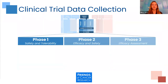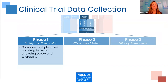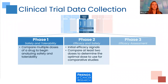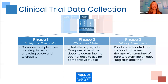Breaking down clinical trials into their phases: phase 1 focuses on safety and tolerability, comparing multiple doses of a drug to begin analyzing safety and tolerability. In phase 2, which focuses more on efficacy, we see initial efficacy signals and compare at least two doses to determine the optimal dose for comparative studies. And in phase 3, we perform our efficacy assessment with randomized control trials comparing the new therapy with standard of care to determine efficacy — also often called the registrational trial.